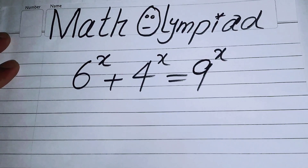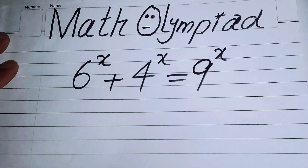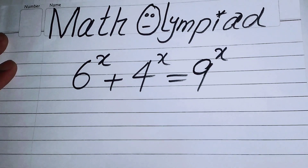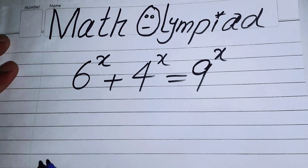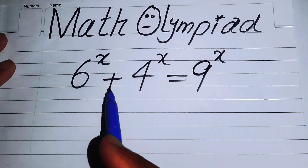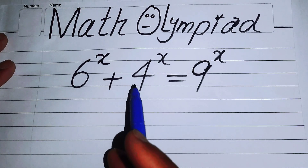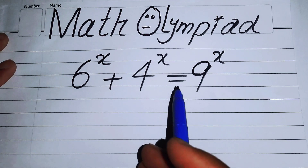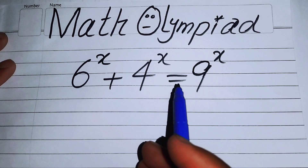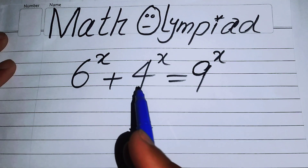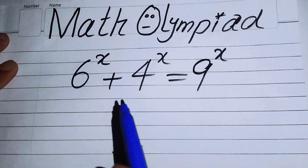Hello everyone, welcome back to the Map of Mathematics. In this video we are going to solve this nice exponential equation problem: 6 to the power of x plus 4 to the power of x is equal to 9 to the power of x. We will solve this problem for the value of x.